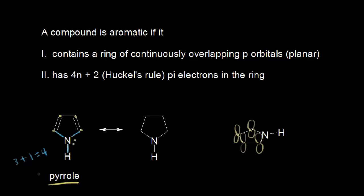We know that's not the case, because pyrrole is an aromatic molecule. An sp3 hybridized nitrogen would mean no p orbitals at that nitrogen, which would violate the first criterion for this compound to be aromatic. So there must be some way to get that nitrogen to be sp2 hybridized. This lone pair of electrons on this nitrogen is actually not localized to this nitrogen. We can take this lone pair of electrons and move them in here, so that lone pair of electrons can participate in resonance.